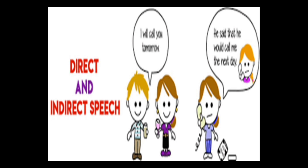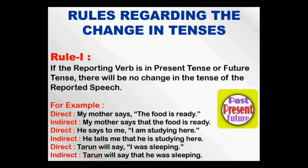Look at this presentation. Here you can see a boy telling a girl, 'I will call you tomorrow.' The girl is changing the direct speech into indirect speech for her friend: 'He said that he would call me the next day.' 'I' has been changed to 'he' because 'I' is first person, changing according to the subject. Subject-verb agreement is also followed, and 'that' is used as it is an assertive sentence.